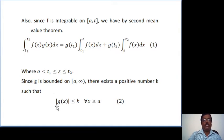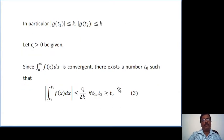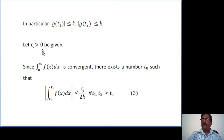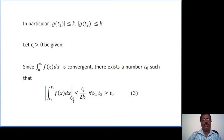By the definition of boundedness, there exists k such that |g(x)| ≤ k for all x ≥ a — call this equation 2. In particular, |g(t₁)| ≤ k and |g(t₂)| ≤ k. Let ε > 0 be given. Since the integral from a to infinity of f(x) dx is convergent, there exists t₀ such that |∫_{t₁}^{t₂} f(x) dx| < ε/(2k) for all t₁, t₂ ≥ t₀. This is by the definition of convergence — call this equation 3.